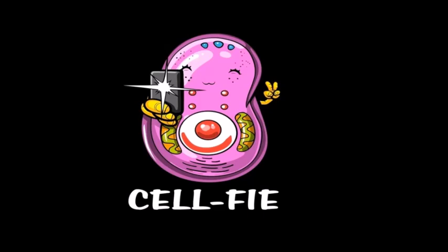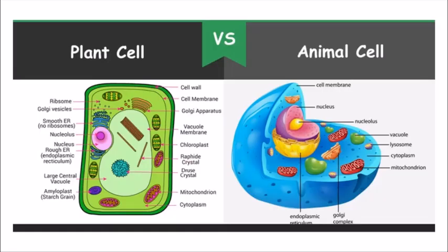There are different types of organelles present in the cell which perform different types of functions, and they form every organ in the body. You all must have heard about plant cells and animal cells. Plant cells are present in plants; all the cells combine and the plant's body is formed. If we look under the microscope, we will find various organelles present.